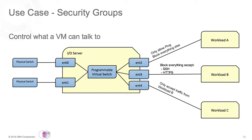Rules themselves are generally quite specific, but are bundled together into high-level policies that can then be applied to multiple workloads. Rules are, by nature, inclusive — the policies simply state what you are allowed to talk to. A policy with no rules means that a workload can't talk to anything. If the policy allows port 443, that means HTTPS traffic is allowed through, but nothing else.